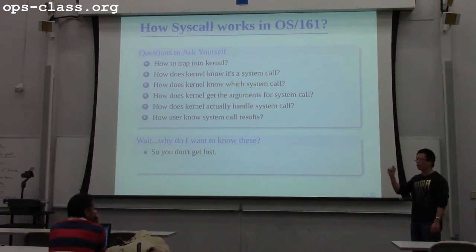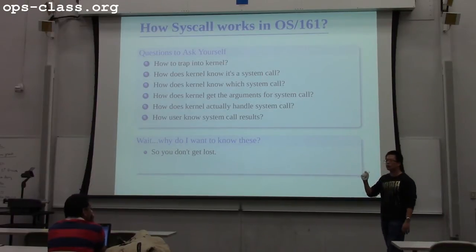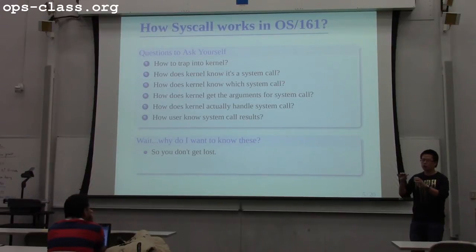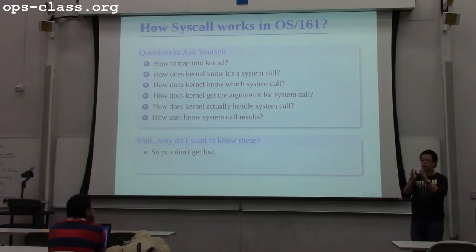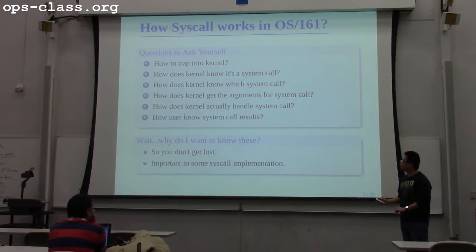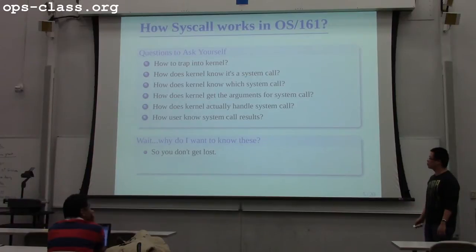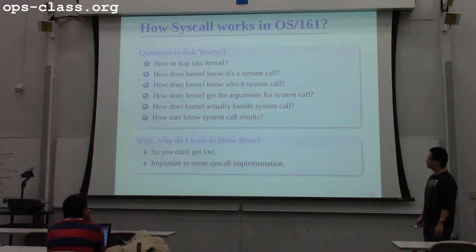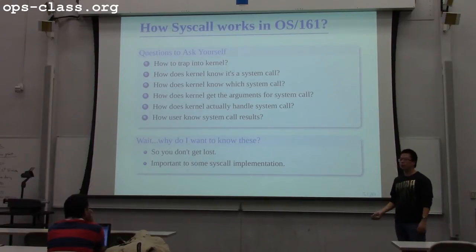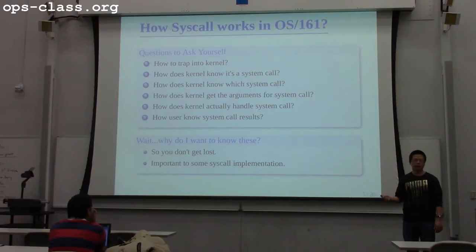When you implement a small part of a big system, it's very important to have a big picture of how the system works. When you define the interface — like what your sys_open function looks like, what arguments are there, how you get all those arguments, and where you write return values — that's the part you mostly need to understand. It's always good to have a big picture in your mind when you only need to do a small part of the system, especially for syscalls that have unusual argument passing like lseek.